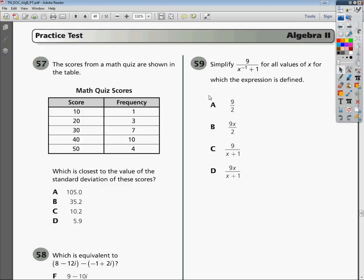The question says simplify 9 over x to the negative 1 power plus 1 for all values of x for which the expression is defined. The reality is I've got that weird looking denominator. I'm going to deal with that first and then come back and talk about what I'm going to do with the 9.